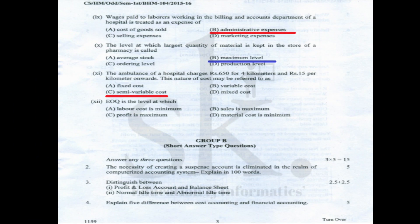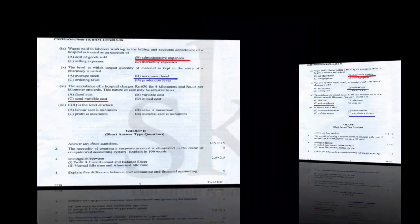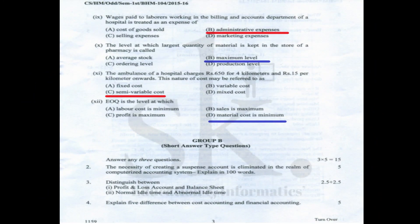Question number eleven: an ambulance charges ₹650 for four kilometers and ₹15 per kilometer onwards — this is a semi-variable cost because there is a fixed component (₹650 for 4 km) and a variable component (₹15 per km). Together they form a semi-variable cost. The correct option is C.